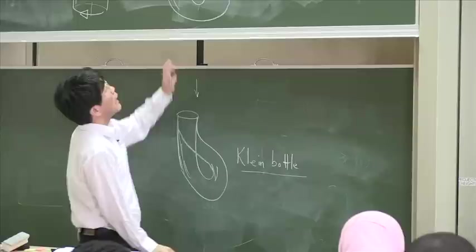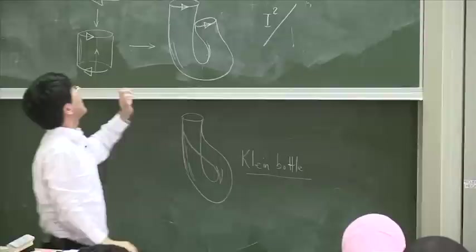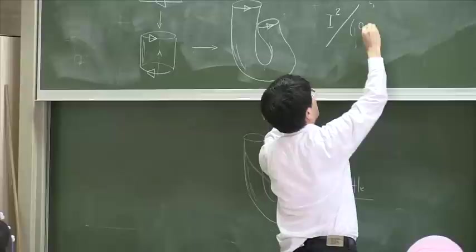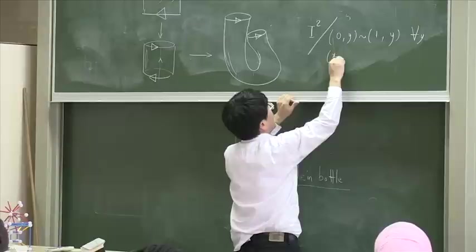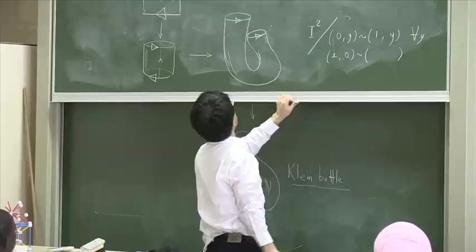In symbolic terms, this identification is very easy because you get this square. The vertical identifications as before, 0y is identified with 1y. That's okay. This time, however, x0 is identified with, what do you think it's identified with?